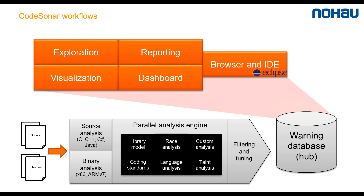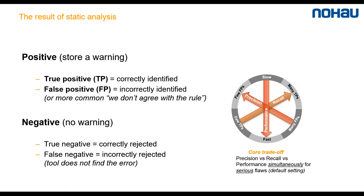So how does CodeSonar work? You have your source code, binaries, or a mix of them, and then you launch the CodeSonar analysis. Several parallel analyses are performed on the code, and CodeSonar can be tuned with different settings. Everything is stored in a database, and then you use a web browser or Eclipse to explore and view the results and reports. When using static analysis you have hits — positive hits — or no hits, which are negatives. The negatives are never stored because they are not found, but positives could be a true positive, correctly identified, or a false positive, which means incorrectly identified.